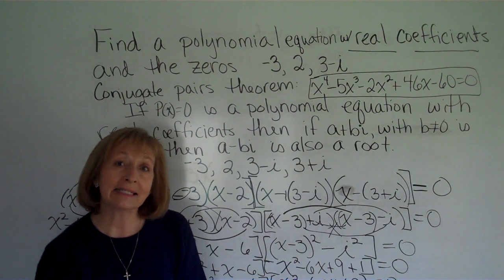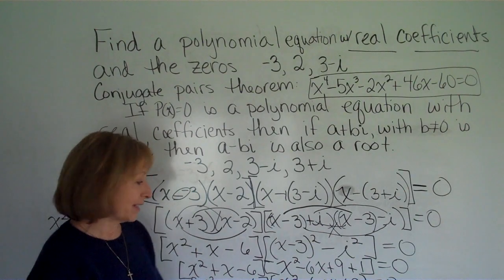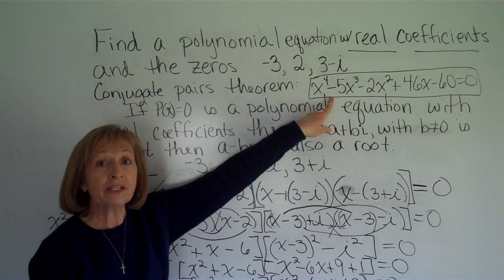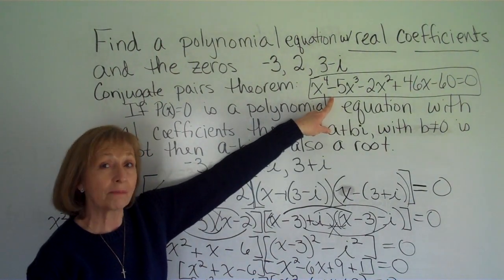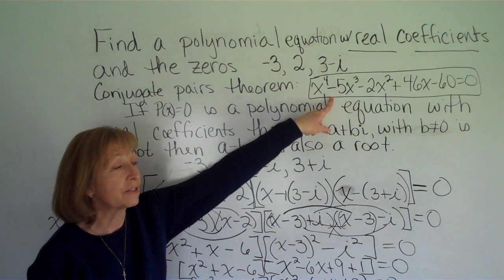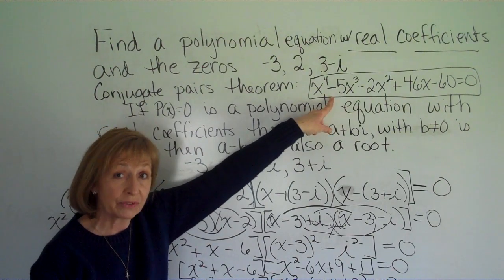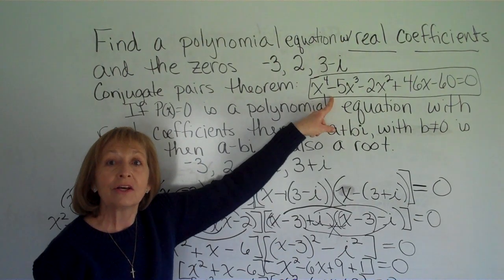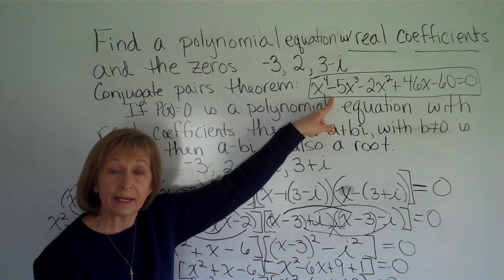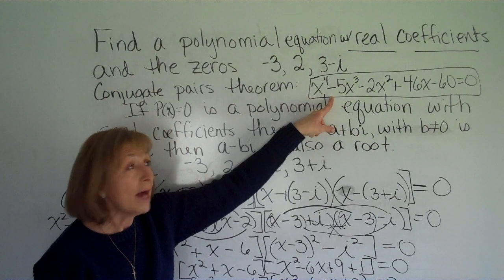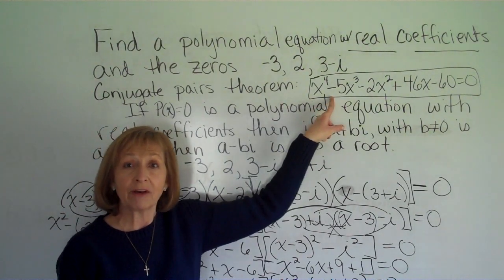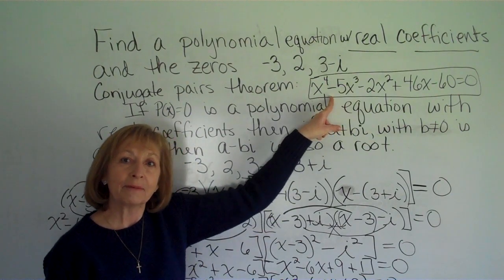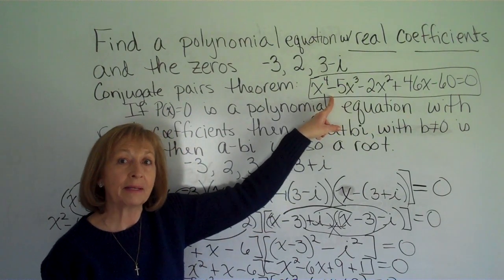This is to give us hindsight so that when they give us a polynomial equation, so when they give us an equation such as x to the fourth minus 5x cubed minus 2x squared plus 46x minus 60 equals 0, and they ask us to find the roots or the solutions to that equation, what we want to do is we want to find a start of the roots and then get that information and let it help us find the remaining roots.